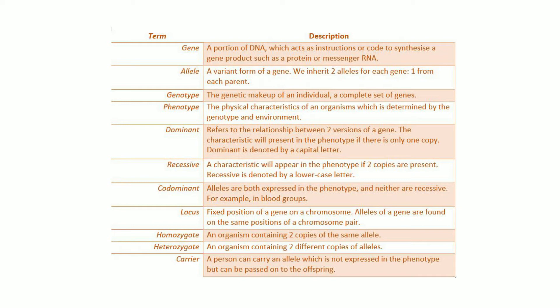Dominant is denoted by a capital letter. Recessive: this is a characteristic which will appear in the phenotype if two copies are present. Recessive is denoted by a lowercase letter. Co-dominant: this means alleles are both expressed in the phenotype and neither are recessive, for example in blood groups. Locus: this is a fixed position of a gene on a chromosome. Alleles of a gene are found on the same positions of a chromosome pair.